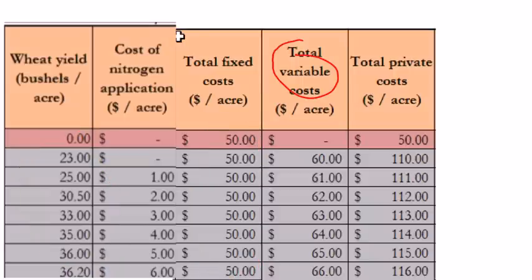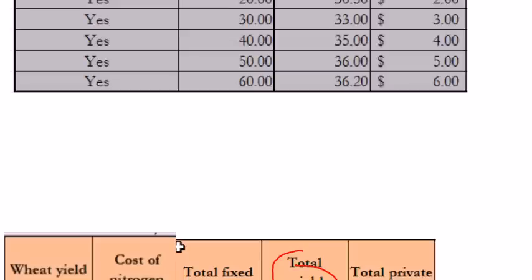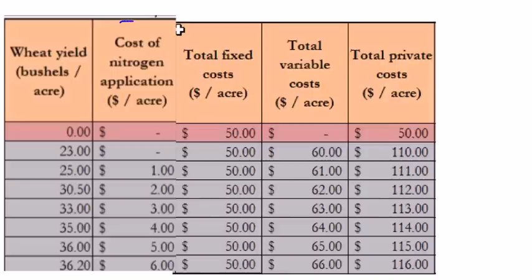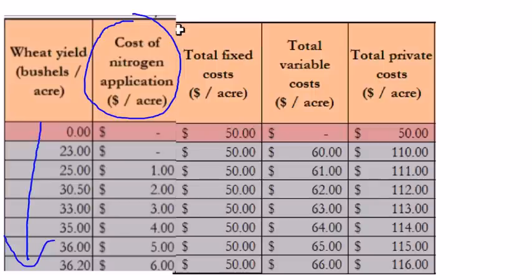A variable cost is a cost for inputs that change as output changes. If you want to raise more wheat, sometimes you need more wheat seeds — so you spend more on wheat seed. If you want more wheat, sometimes you have to apply more nitrogen fertilizer — that's more variable cost. If you want to harvest more fields of wheat, you have to use more tractor fuel — that's an increase in variable input cost. We've already seen nitrogen as an example, where wanting more yield meant spending more on nitrogen.